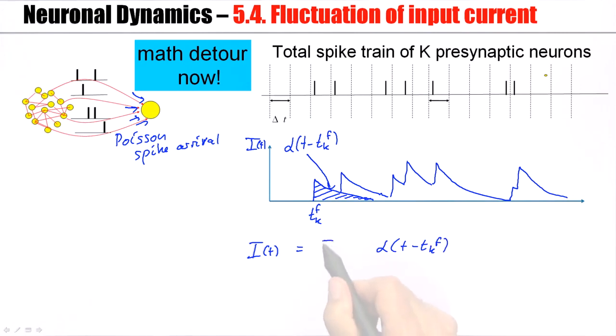So the total current is the sum of all these current pulses. I have to sum over the different neurons. I have K presynaptic neurons. Then each neuron may send out several spikes. This might be the first spike of neuron k. Here might be the second spike of neuron k. I have to sum over all firing times of this neuron k. I can now ask whether I can make any statement about this current.